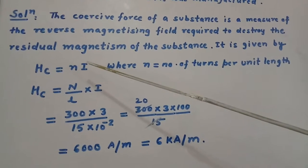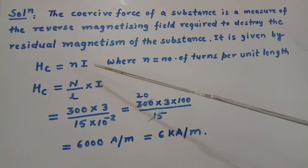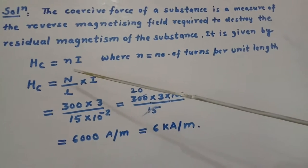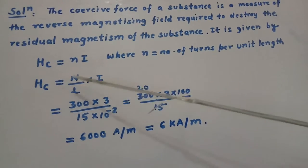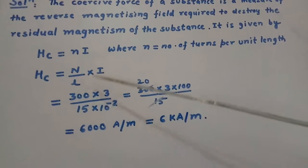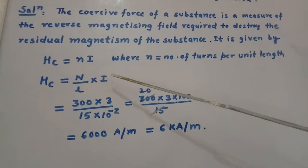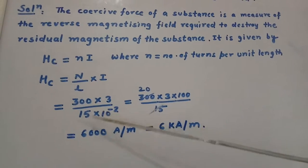The length is 15 centimeter and the current is 3 ampere. So we put the values: Hc equals N upon L into I. N is 300, I equals 3 ampere, L equals 15 centimeter.